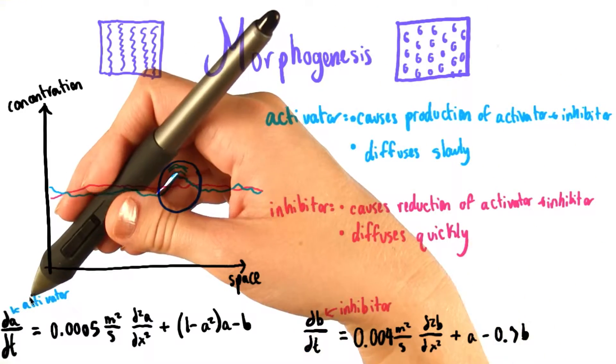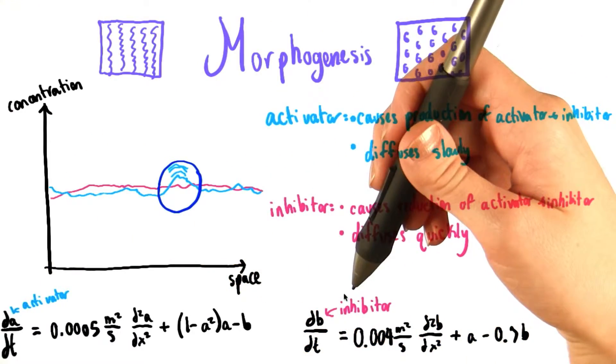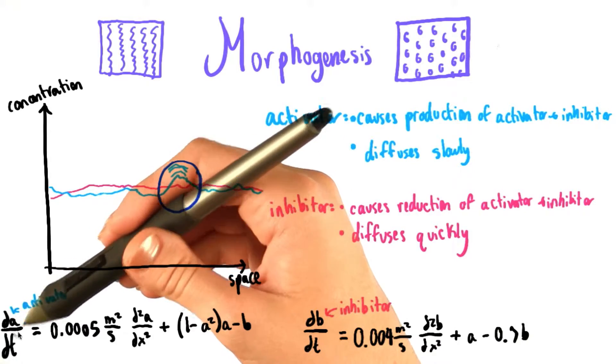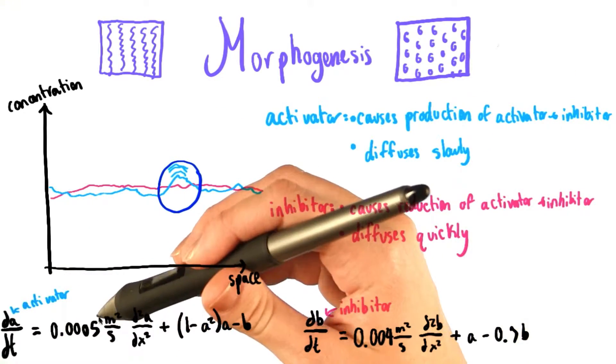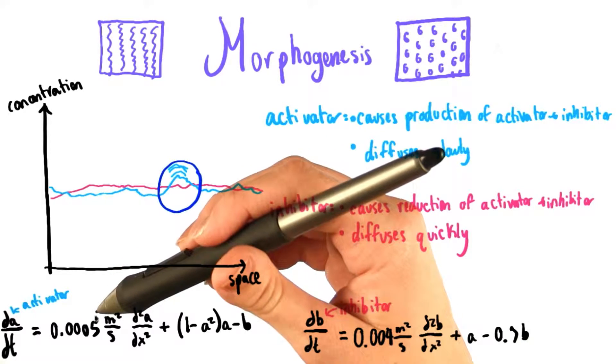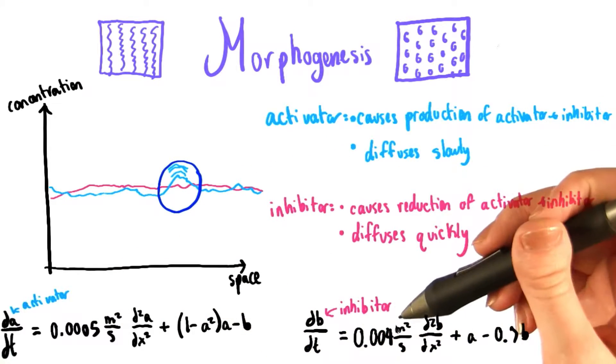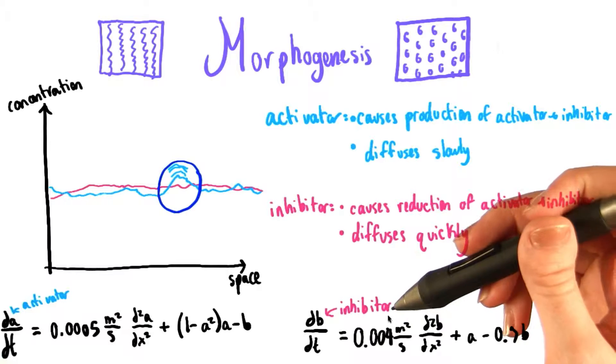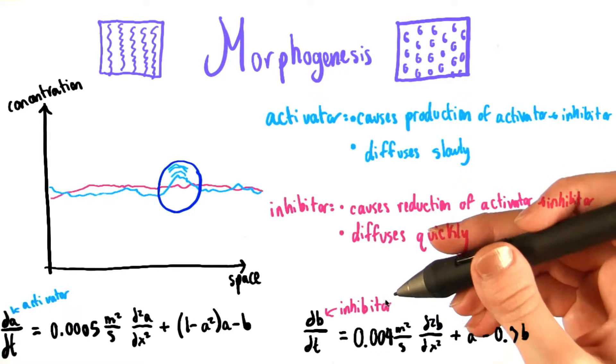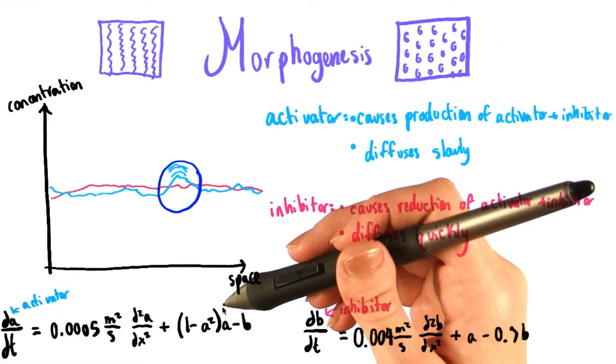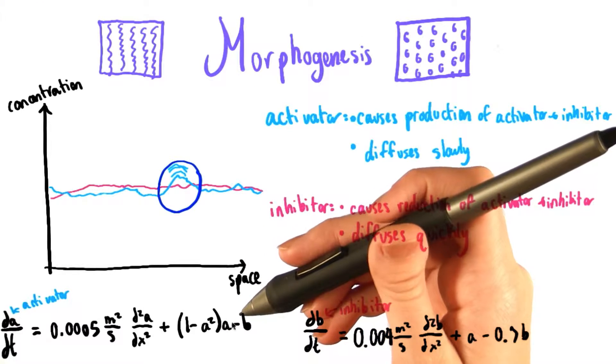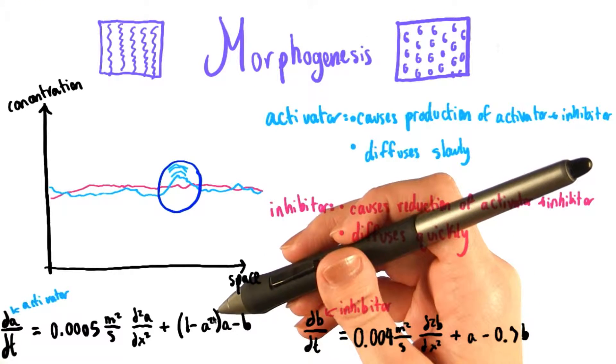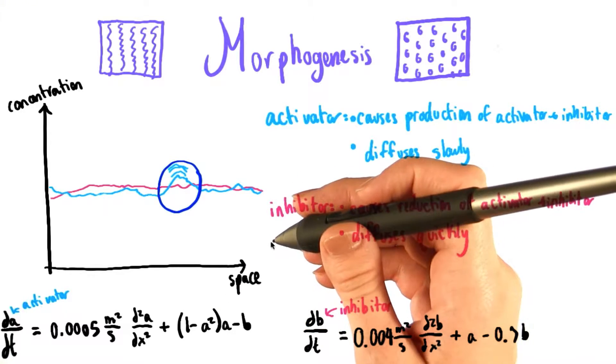We have equations for how the concentration of the activator and inhibitor change with time. Going to call the concentration of the activator A, and the concentration of the inhibitor B. This constant right here shows us that, yes, in fact, the activator is very slow moving. As opposed to this constant over here, which shows that the inhibitor acts on a much shorter time scale. Back over in the equation for dA/dt, this factor of 1 minus A squared limits the growth of A when A tends toward 1 or toward negative 1. This is basically similar to logistic growth.